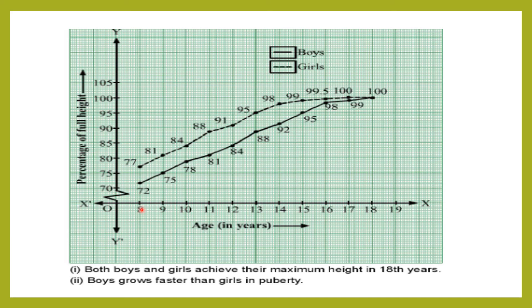For boys: age 8: 77%, age 9: 81%, age 10: 84%, age 11: 88%, age 12: 91%, age 13: 95%, age 14: 98%, age 15: 99%, age 16: 99.5%, age 17: 100%. Plot these points to get a smooth line graph.